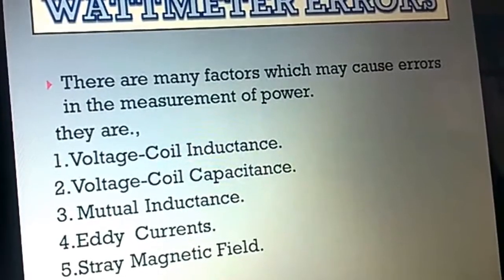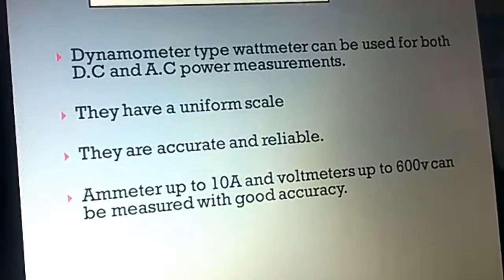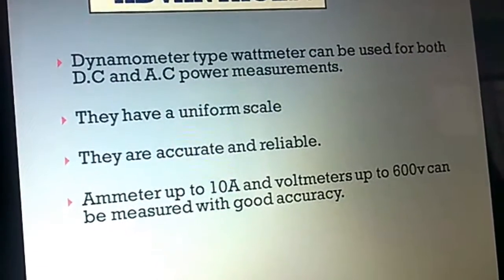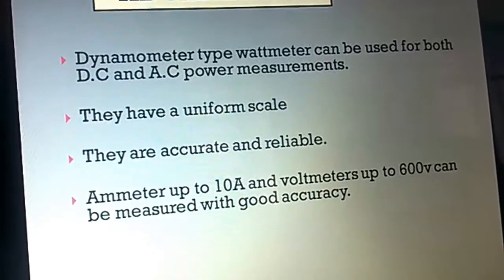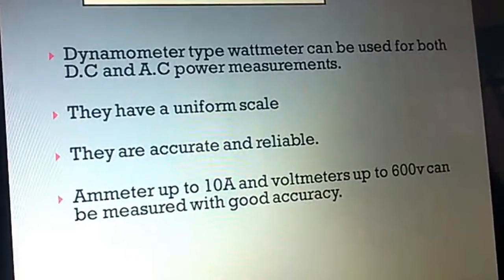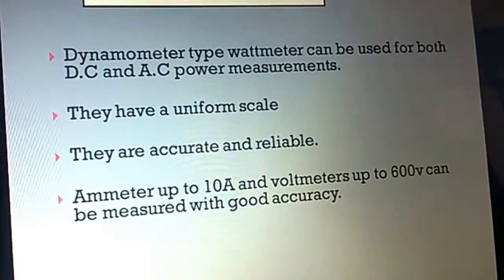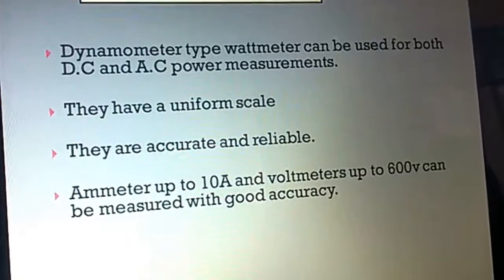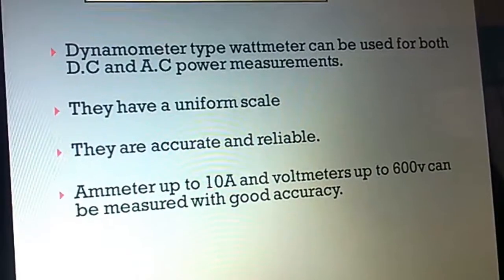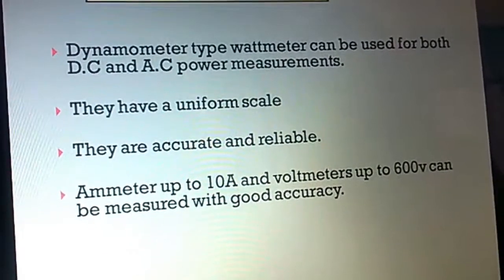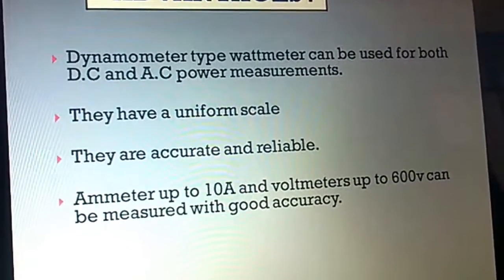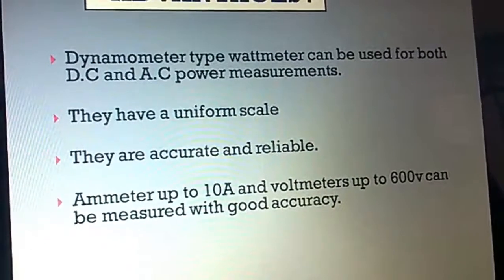Advantages of the dynamometer type: it can be used for both DC and AC measurements. They have a uniform scale. They are accurate and reliable. Ammeters up to 10 amperes and voltmeters up to 600 volts can be measured with good accuracy.